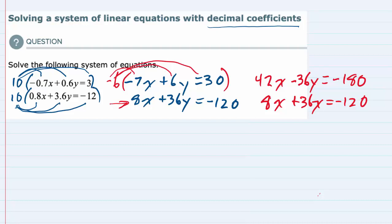And the reason I multiplied that top equation by -6 was so that now whenever I add these two equations, those terms are going to cancel.